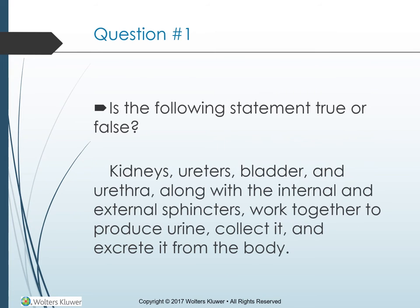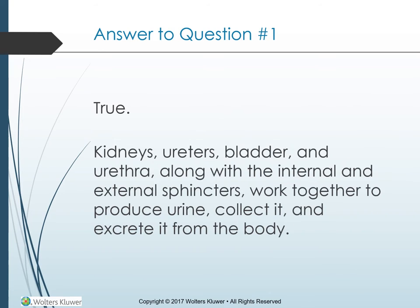Question — is the following statement true or false? Kidneys, ureters, bladder, and urethra, along with the internal and external sphincters, work together to produce urine, collect it, and excrete it from the body. True — kidneys, ureters, bladder, and urethra along with internal and external sphincters work together to produce urine, collect it, and excrete it from the body.